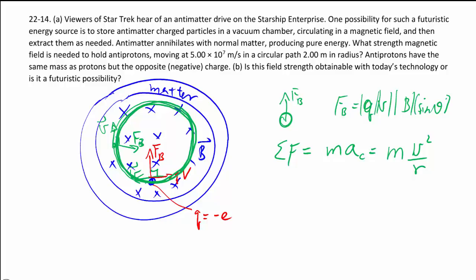QVB and sine theta therefore equals one. So you have MV squared over R. The V kind of cancels out. And to solve for B, we just divide Q over.